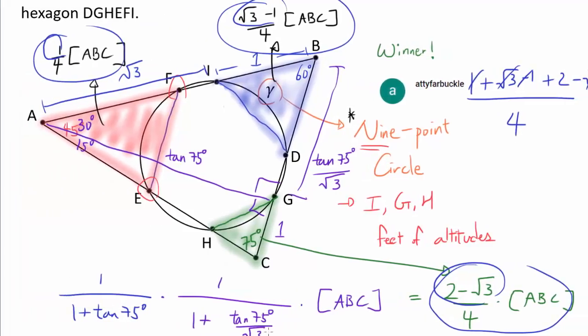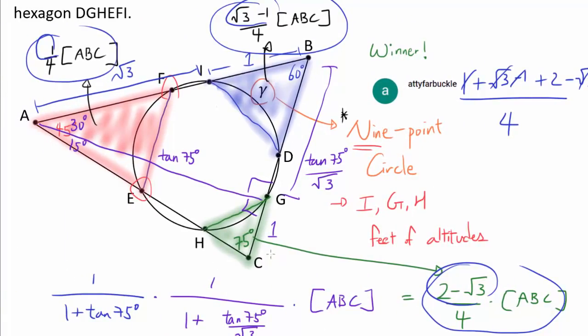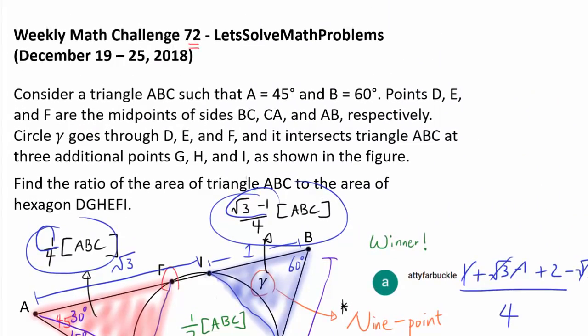So the sum of the areas of the red, blue, and green triangle is 1/2 the area of the entire triangle ABC, which is telling us that the area of the hexagon is also 1/2 triangle ABC.